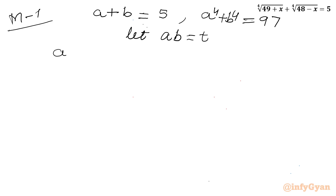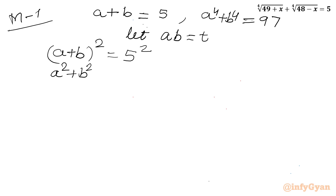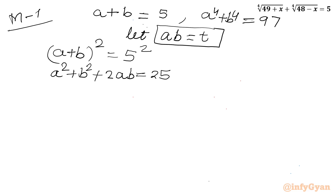I will square both sides of equation 1. So (a + b)² = 5², which gives a² + b² + 2ab = 25. Since ab = t, I can write a² + b² = 25 − 2t.